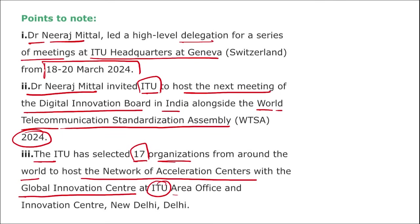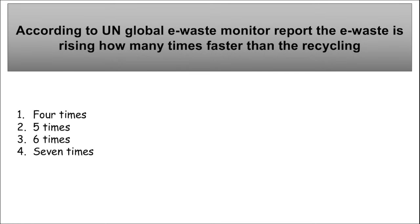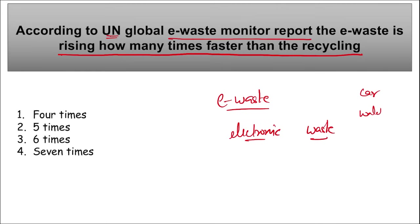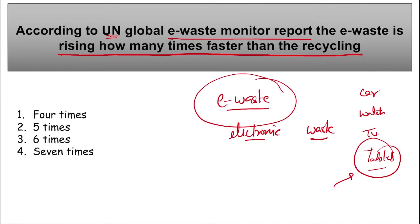The ITU has selected 17 organizations from around the world to host the network of acceleration centers, with the global innovation center at ITU's area office and innovation center in New Delhi. Next: according to the UN Global E-Waste Monitor report, e-waste is rising five times faster than the recycling of that e-waste. E-waste is electronic waste — as everything shifts to electronics, the waste generated is way too high because once a part is not working, we replace it and it becomes waste.